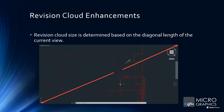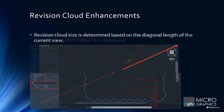Revision cloud enhancements: previously the arc in a revision cloud could be very small and you'd have to go to Properties to change it. Now it looks at the relative size of your screen and scales the arc length accordingly. When you select it, it's now an actual revision cloud object and you can change the arc chord length directly in Properties.